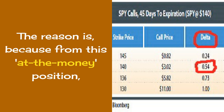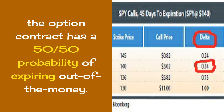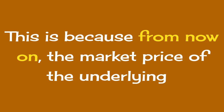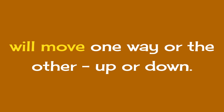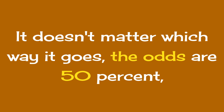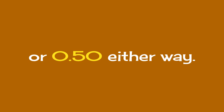The reason is, because from this at-the-money position, the option contract has a 50-50 probability of expiring out of the money. This is because from now on, the market price of the underlying will move one way or the other — up or down. It doesn't matter which way it goes, the odds are 50% or 0.50 either way.